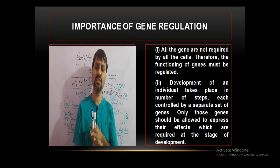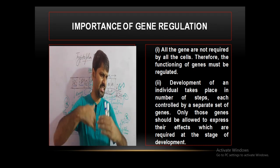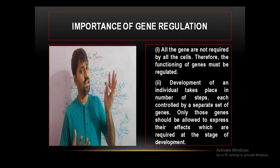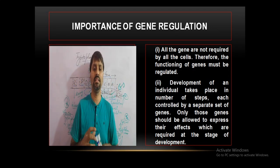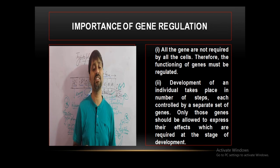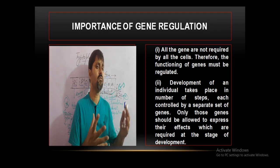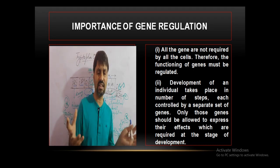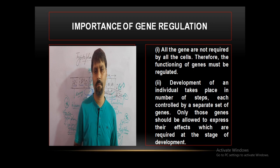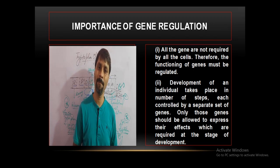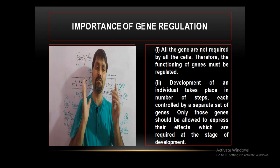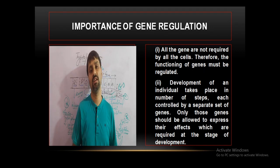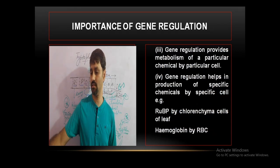The functioning of the gene must be regulated. Secondly, the development of an individual takes place through many stages, and in each stage there are separate sets of genes involved, because separate biomolecules and chemicals are needed. Only those genes which are required at a particular stage of development should be allowed to express their effect. Others will be silenced.